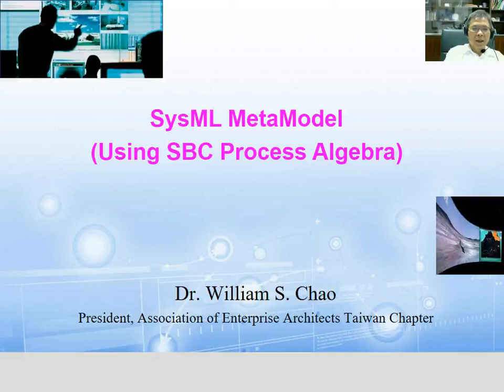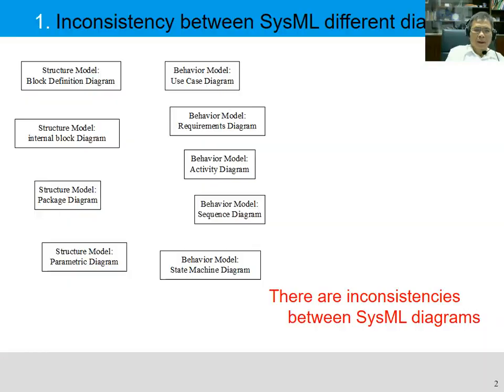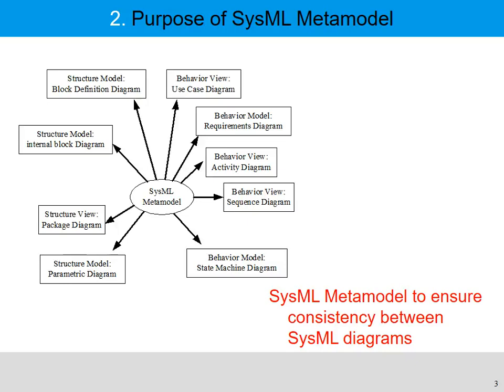Today I'll talk about the SysML meta model using SBC process algebra. Chapter 1 discusses inconsistency between different SysML diagrams. There are many inconsistencies between the nine SysML diagrams, and we need a SysML meta model to ensure consistency between these different diagrams.